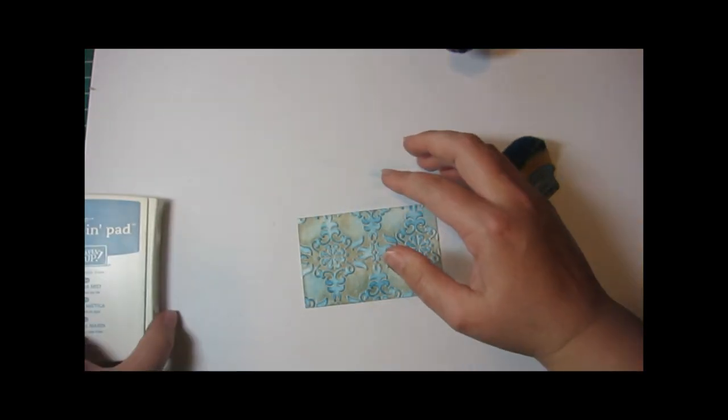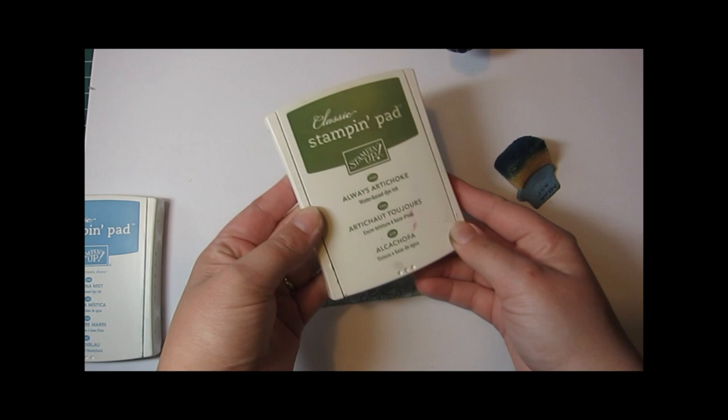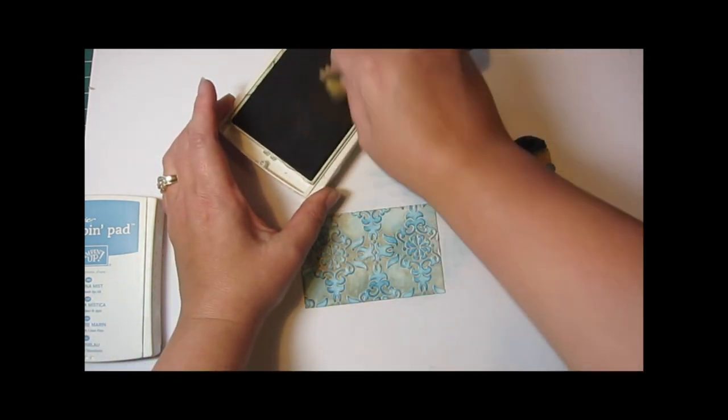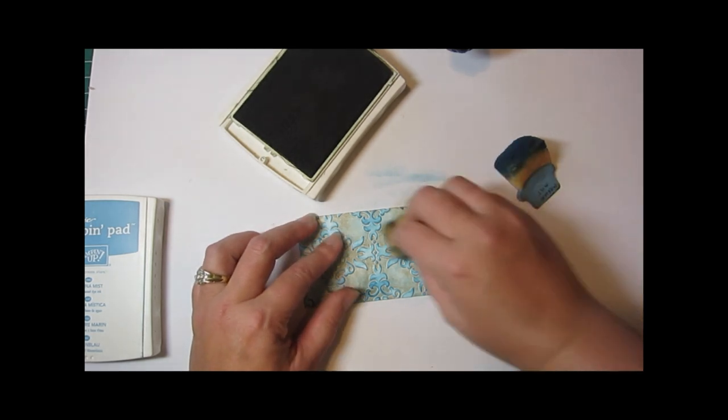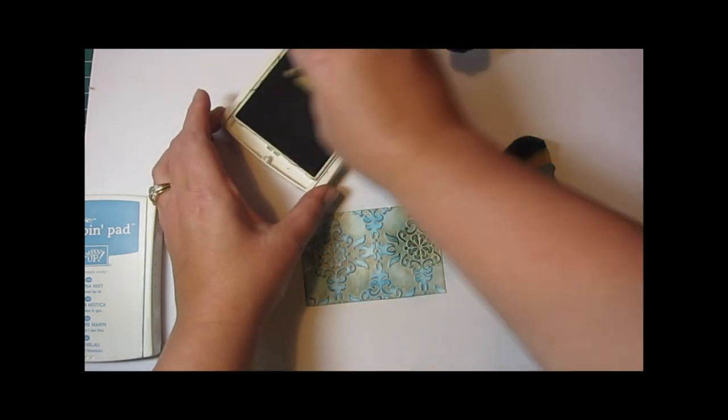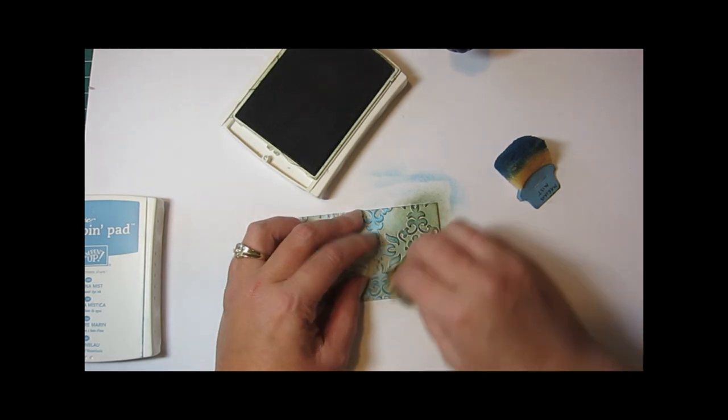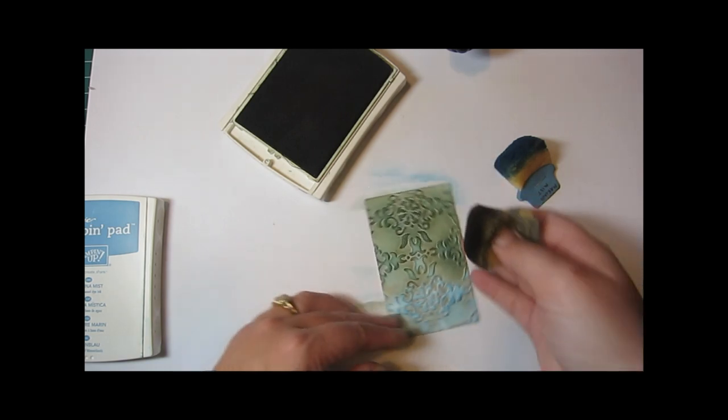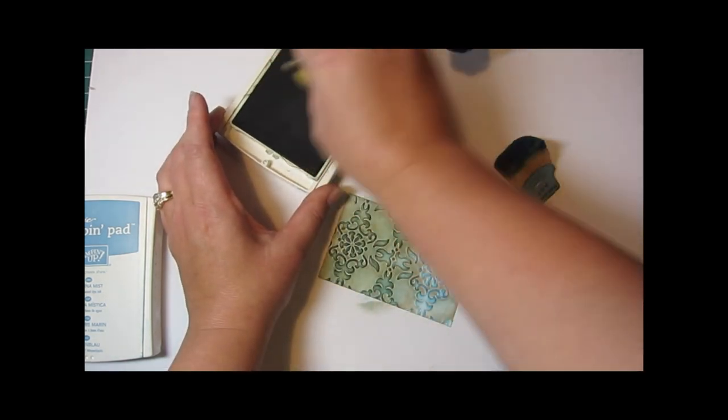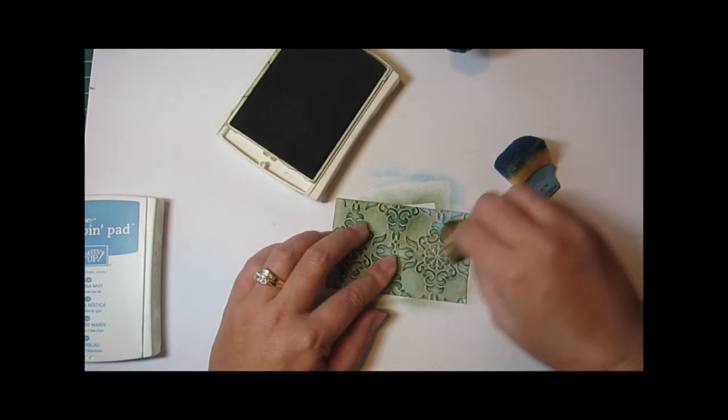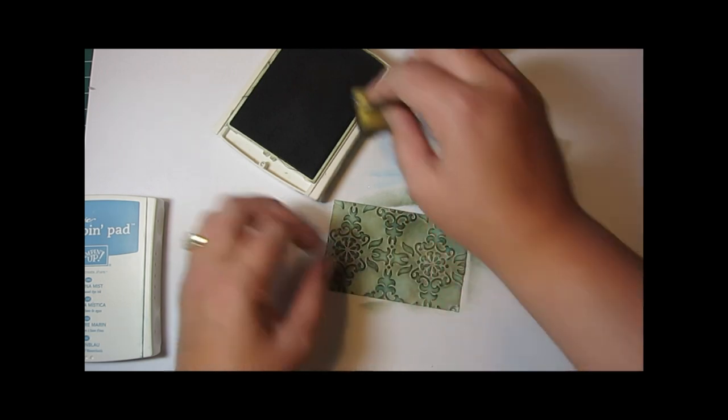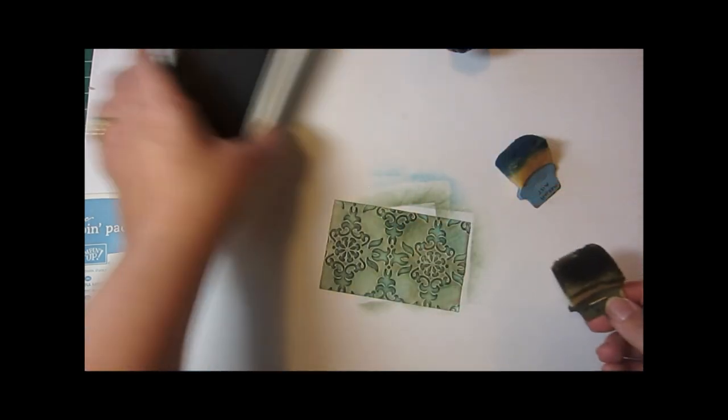Next we're going to use the second color which I'm going to use Always Artichoke. You just kind of want it to be a progressively darker color. As I start to sponge that over the top you can see right away that the colors are layering and they're kind of turning into more of a teal or aqua type of a color. Blue and green mixing together so they layer really nicely. So there's my green.